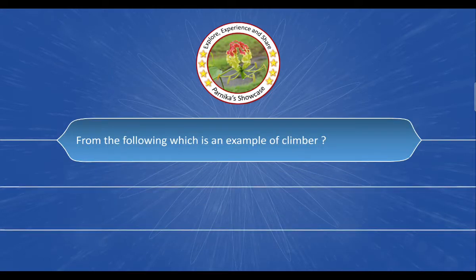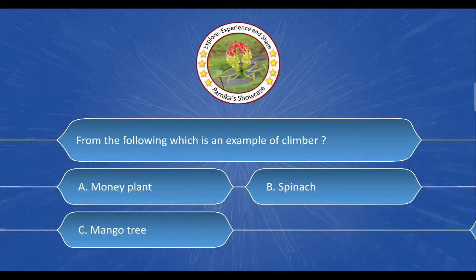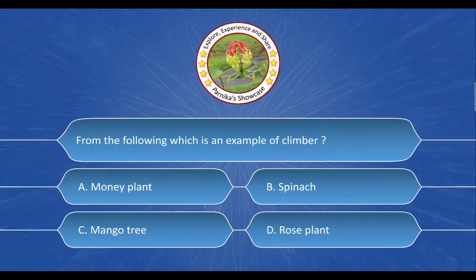Next question: From the following, which is an example of Climbers? The options are A. Money Plant, B. Spinach, C. Mango Tree, D. Rose Plant. And the correct answer is Option A. Money Plant.